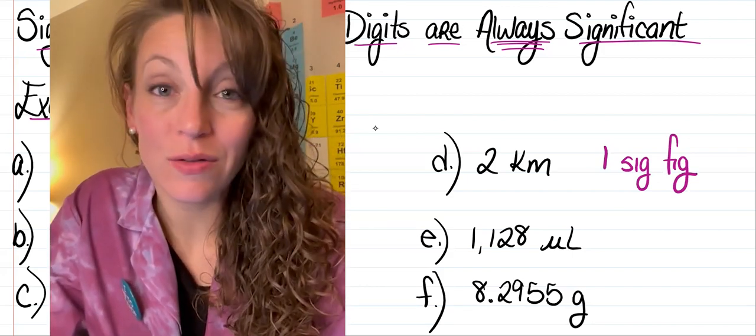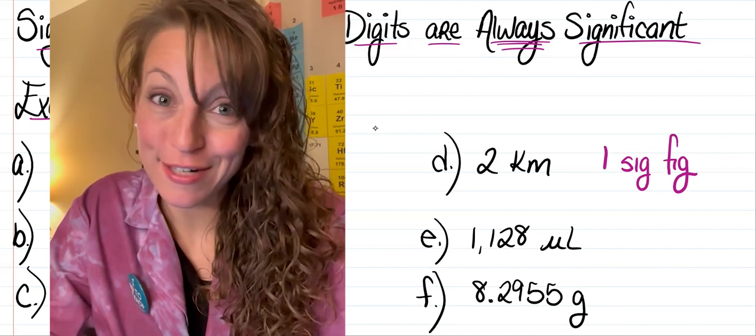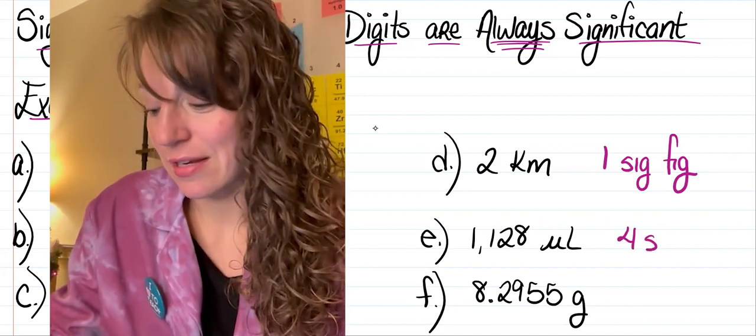In letter E, I've got 1,128 microliters, which gives me a total of four significant figures.